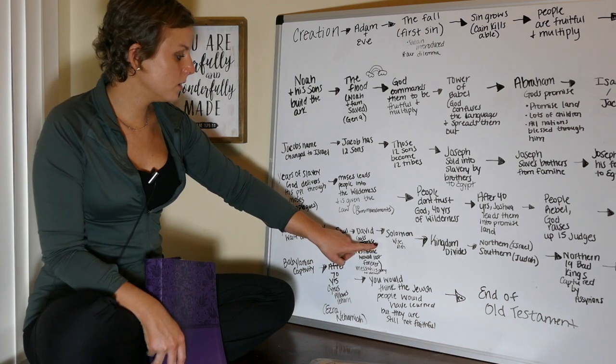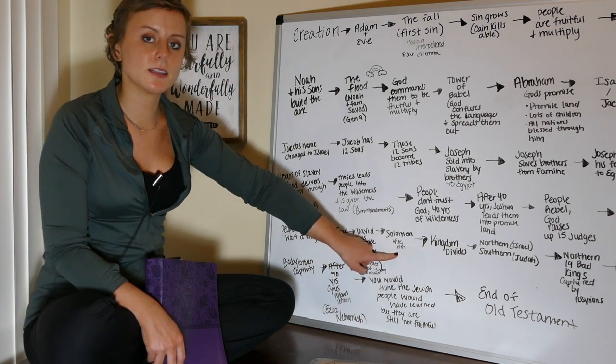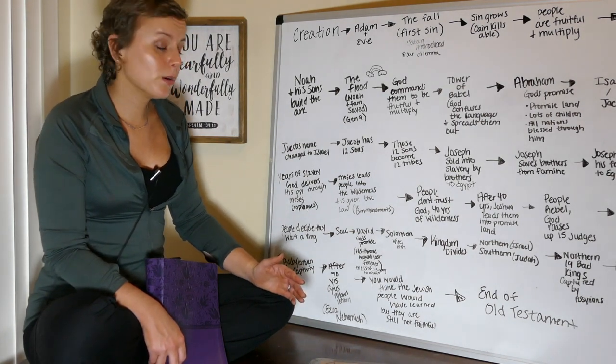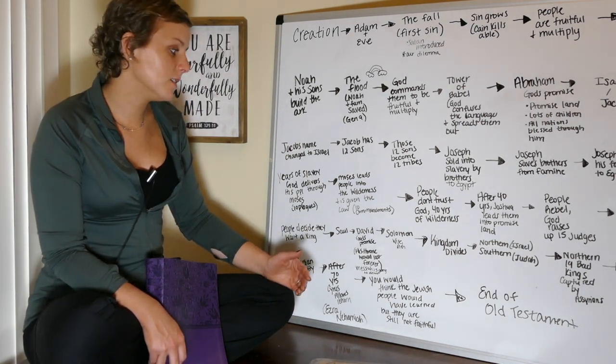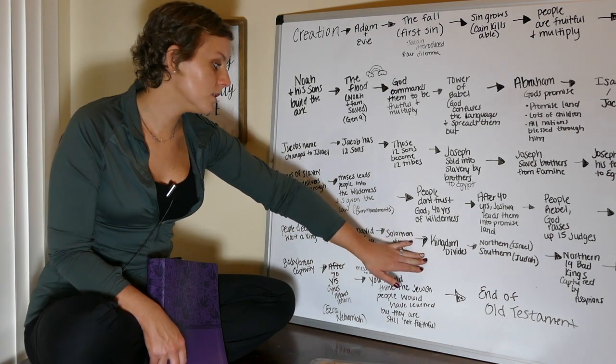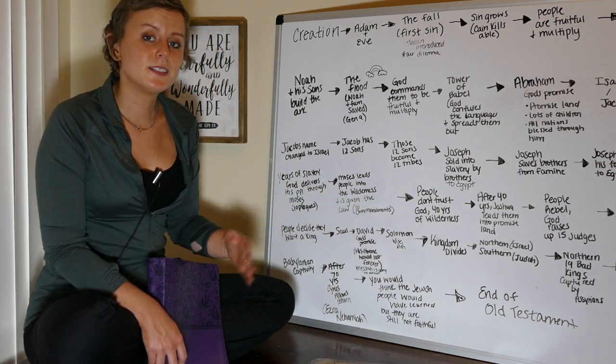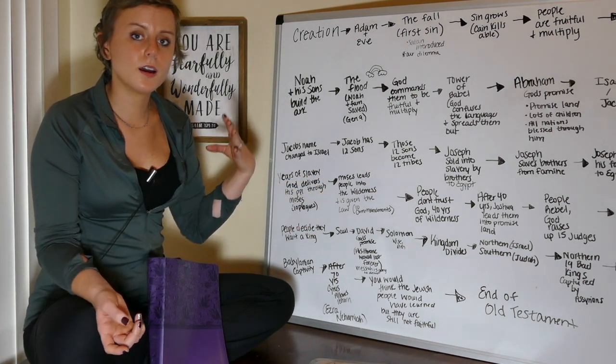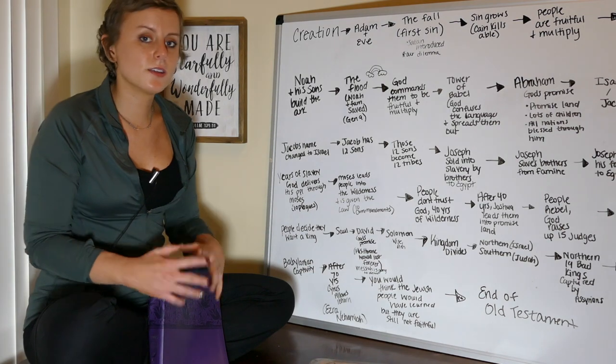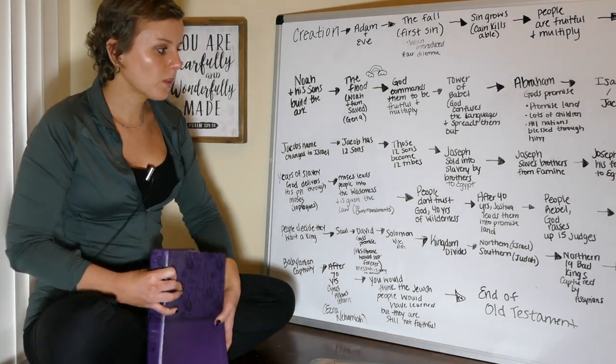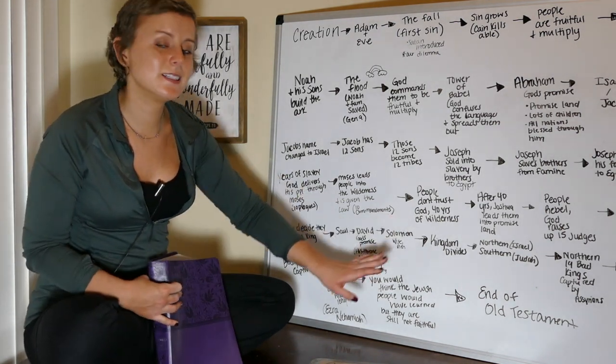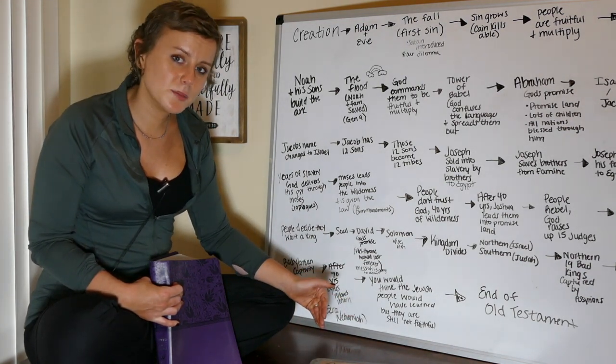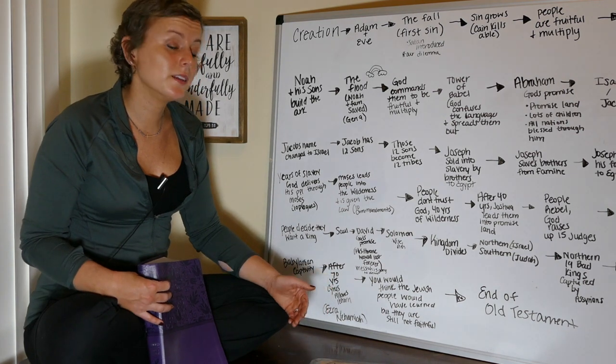So then David's reign ends, and we meet his son Solomon. Solomon is wise and rich, and he makes Israel really successful, but when he dies, the kingdom divides. So the once united kingdom under Solomon divides into a northern and a southern kingdom. You have the northern kingdom, which is Israel, and the southern kingdom, which is Judah. The northern kingdom ends up with 19 bad kings. They all rebel and turn against God, and so God causes them to be captured by people called the Assyrians.